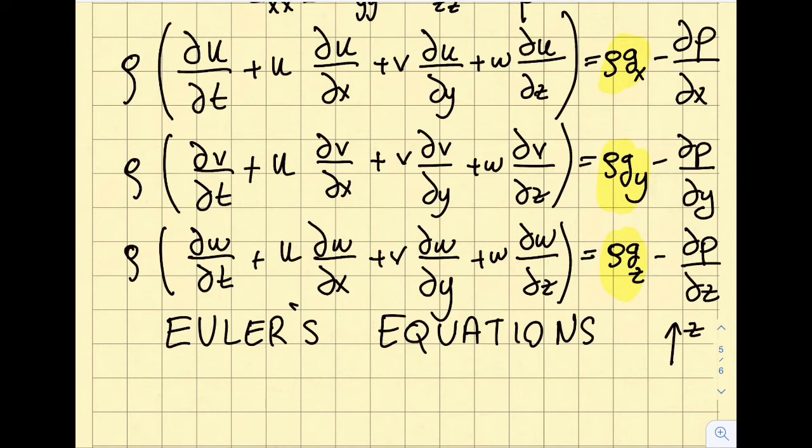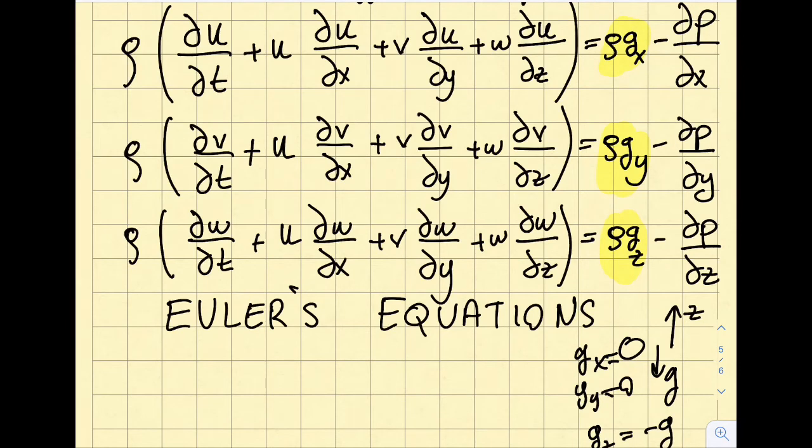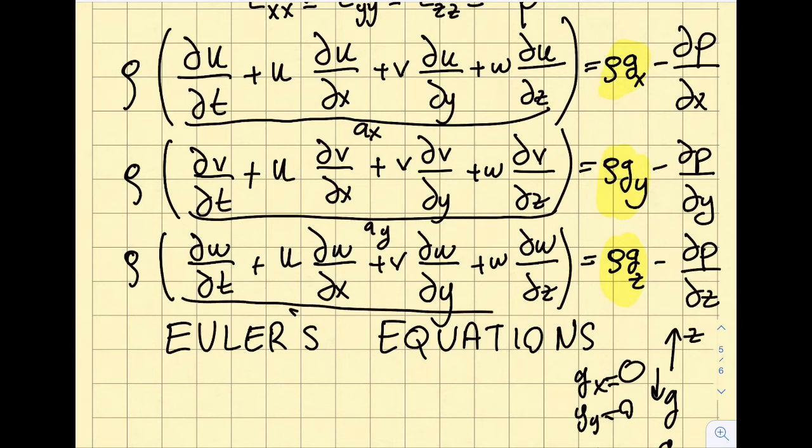I can align my coordinate axis with gravity. If z is pointing up, regardless of how x and y are defined, I can have gravity going down. In this case gx = 0, gy = 0, and gz = -g. These are accelerations: ax, ay, az. When I look at this equation, it's nothing more than F = ma, divided by volume.